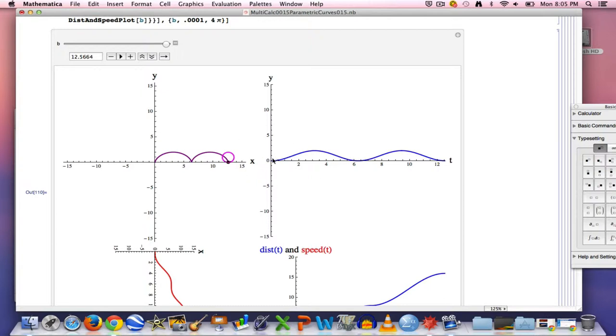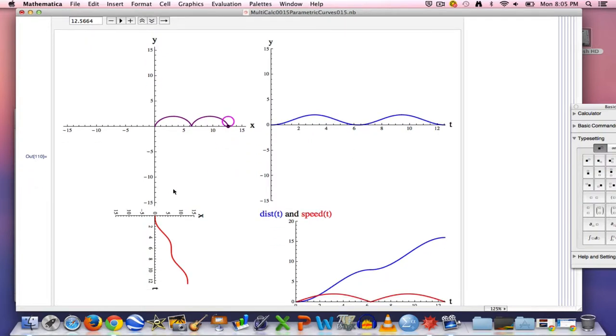The graph in the upper right is the graph of the y-coordinate of the point as a function of time, so it's keeping track vertically of what's going on. The graph down here that's smaller than it should be, but I couldn't get it to work out nicely any other way, is the graph of the x-coordinate of the point as it moves. It keeps track of the left-right motion. Here the motion is always to the right. So this graph, if you look at it with your head turned sideways, is always increasing, though it does have a horizontal tangent at 2π.